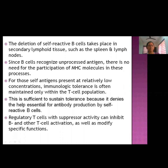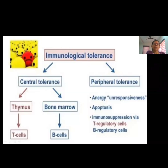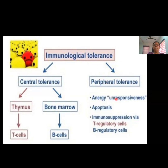Regulatory T cells with suppressor activity can inhibit B cell and other T cell activation and modify specific immune functions. To summarize acquired immune tolerance: Mechanism 1 is negative selection, having two arms — central tolerance achieved in the thymus and bone marrow, and peripheral tolerance. Mechanism 2 is anergy — unresponsiveness and apoptosis. Mechanism 3 is regulation by T regulatory cells and B regulatory cells suppressing immune activity.